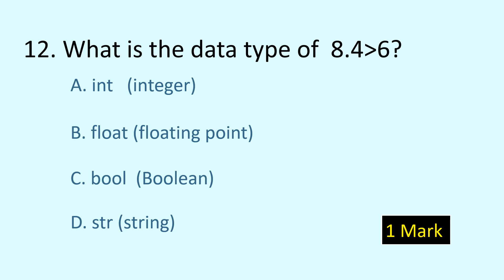Which is the data type of 8.4 greater than 6? The options are int, float, bool, or string, and the answer is bool — boolean. Any expression which results in true or false values is a boolean expression.